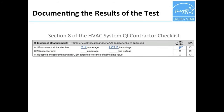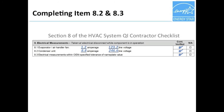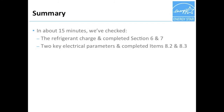Finally, Rob completes section 8. We previously completed item 8.1 in a different video, so now Rob simply records the amperage and voltage values he recorded at the condenser in item 8.2, and then documents in item 8.3 that the measured values were within the OEM's specified tolerance. As you can now see, in about 15 minutes, Rob has checked the refrigerant charge as well as measured two key electrical parameters at the condenser. We've completed sections 6, 7, and the last half of section 8 of the checklist.